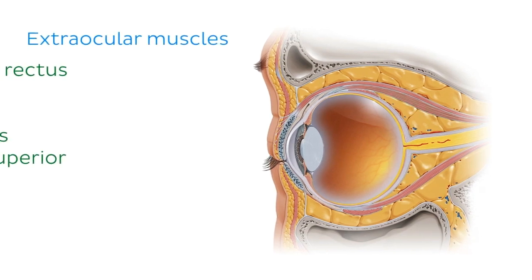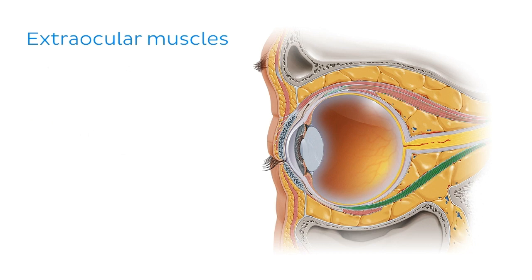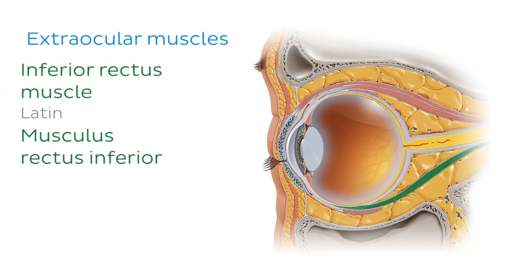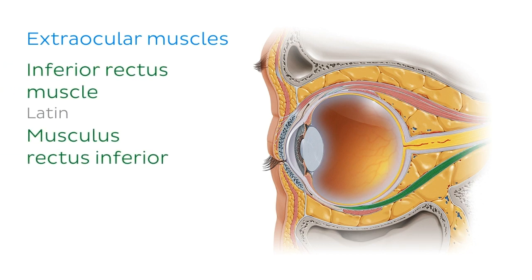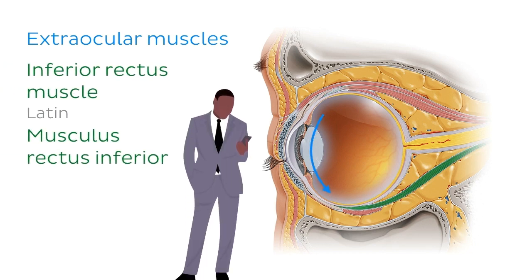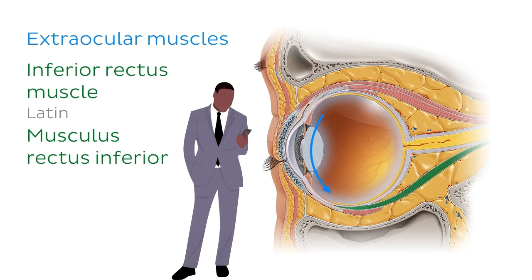We can also see a number of the extraocular muscles, which control eye movement. These include the superior rectus muscle, which helps us look up, and the inferior rectus muscle, which draws our eyes down — like when we look at our phones.